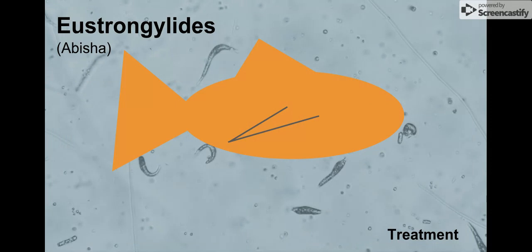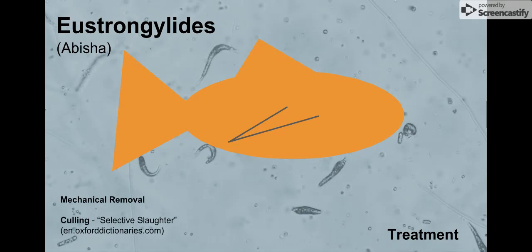So here, as we've discussed before, previous parasites are treated with dewormers, but those are more intestinal parasites. This is a musculature parasite. So to remove it, you need to mechanically rip it out, or use the technique of culling, which is selective slaughtering.